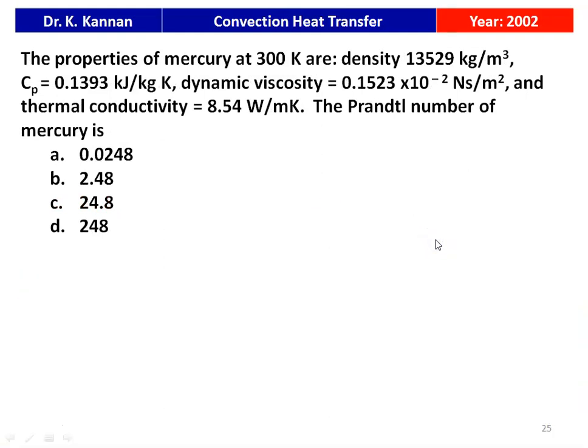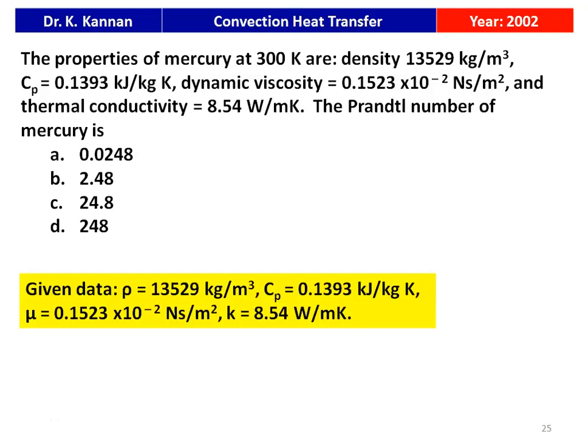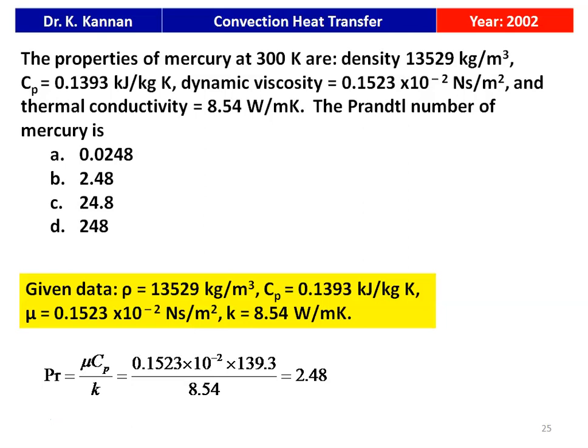Next question from the 2002 paper: the properties of mercury at 300 K are — density 13,529 kg/m³, Cp = 0.1393 kJ/kg·K, dynamic viscosity 0.1523×10⁻² N·s/m², thermal conductivity 8.54 W/m·K. The Prandtl number of mercury is — 0.0248, 2.48, 24.8, or 248? Prandtl number = μCp/k = 0.1523×10⁻² × 139.3 / 8.54 = 2.48. The answer is 2.48.